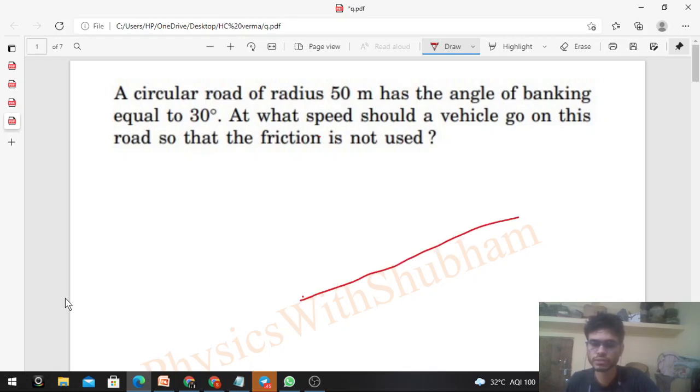So this is the banking of the road and this is your vehicle. The angle is also given, that is 30 degrees, and the radius of the road is given, which is the radius of curvature, right? 50 meter ka radius of curvature. We have to find with what velocity this vehicle should move on this road so that friction is not used.